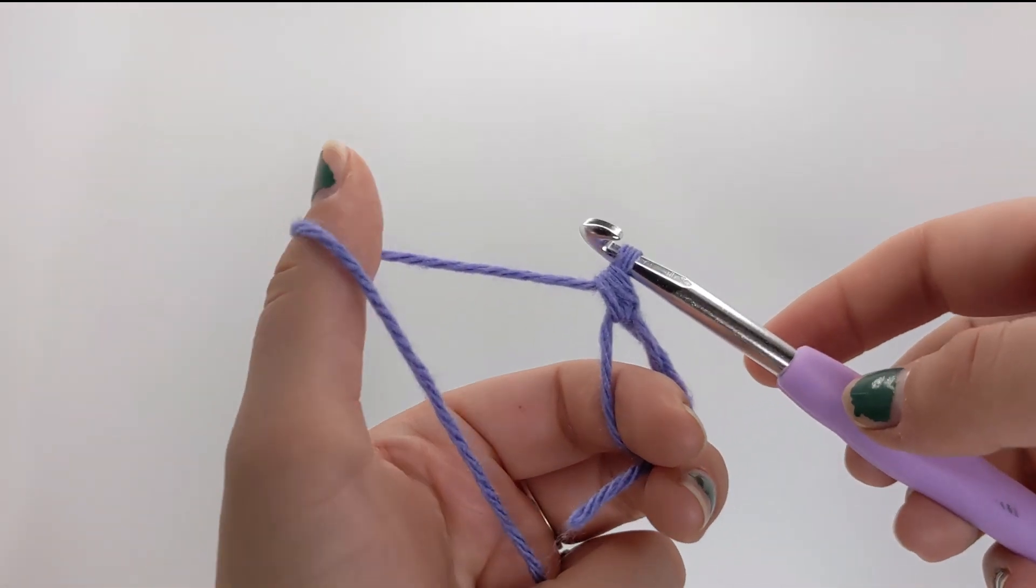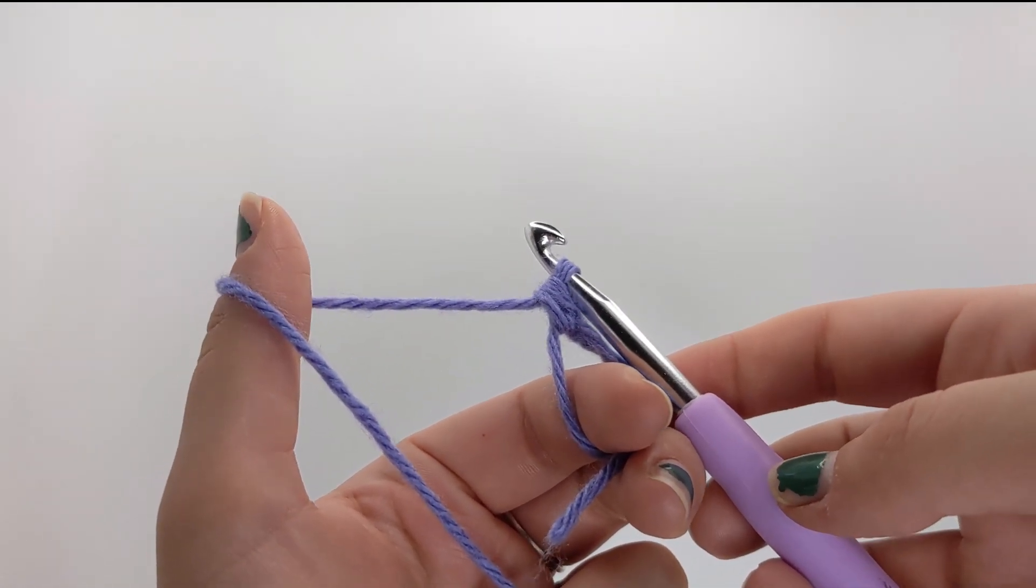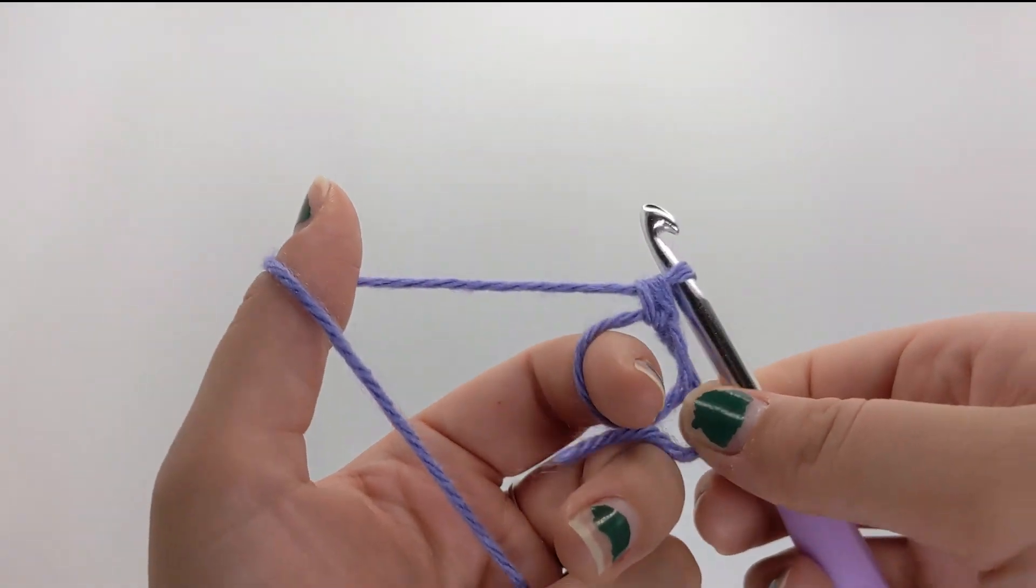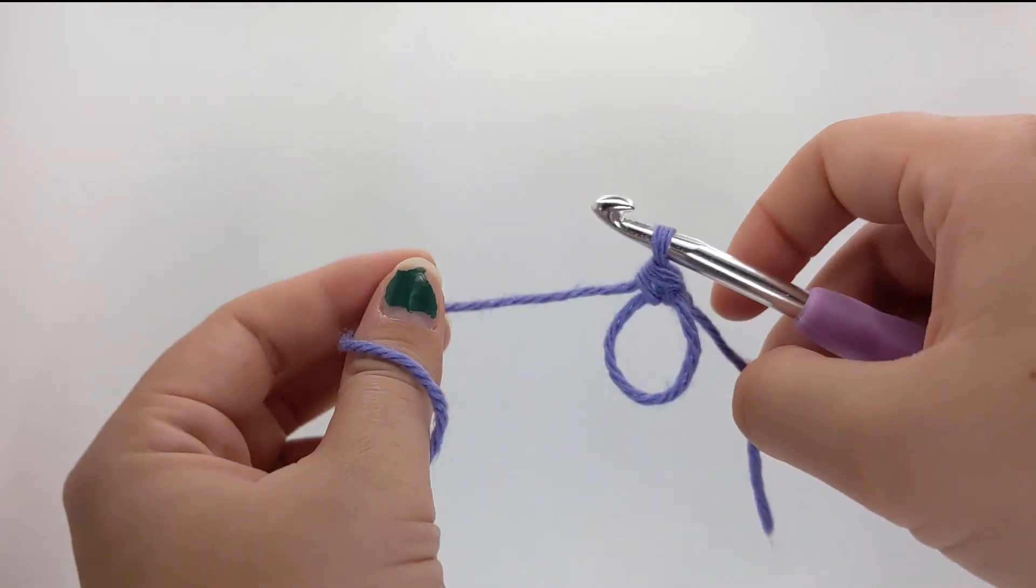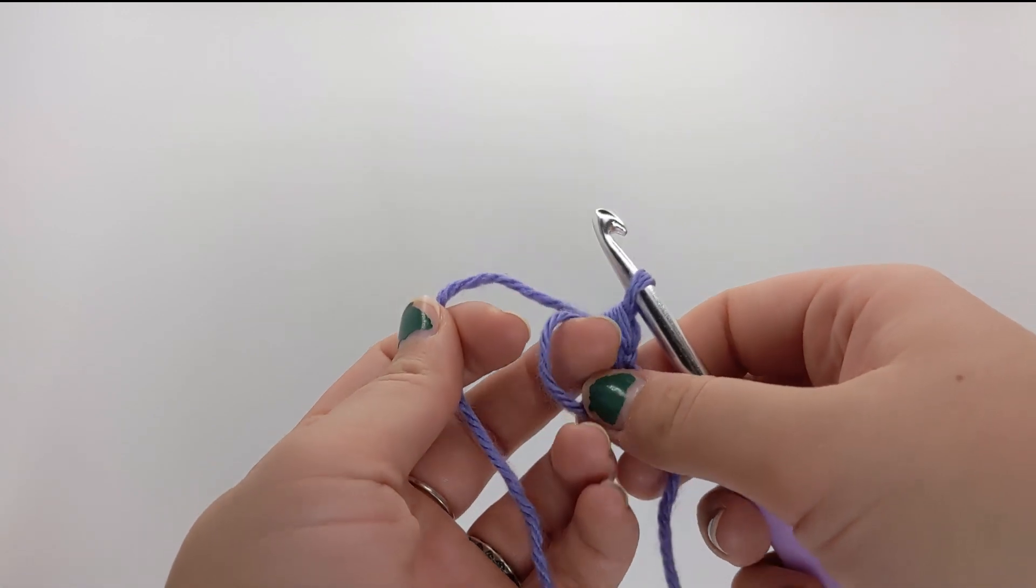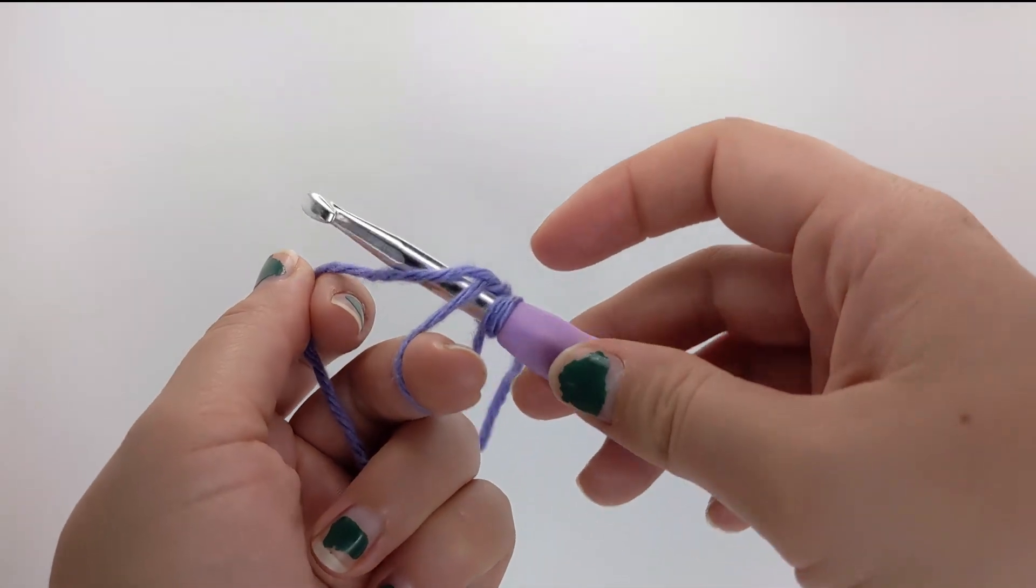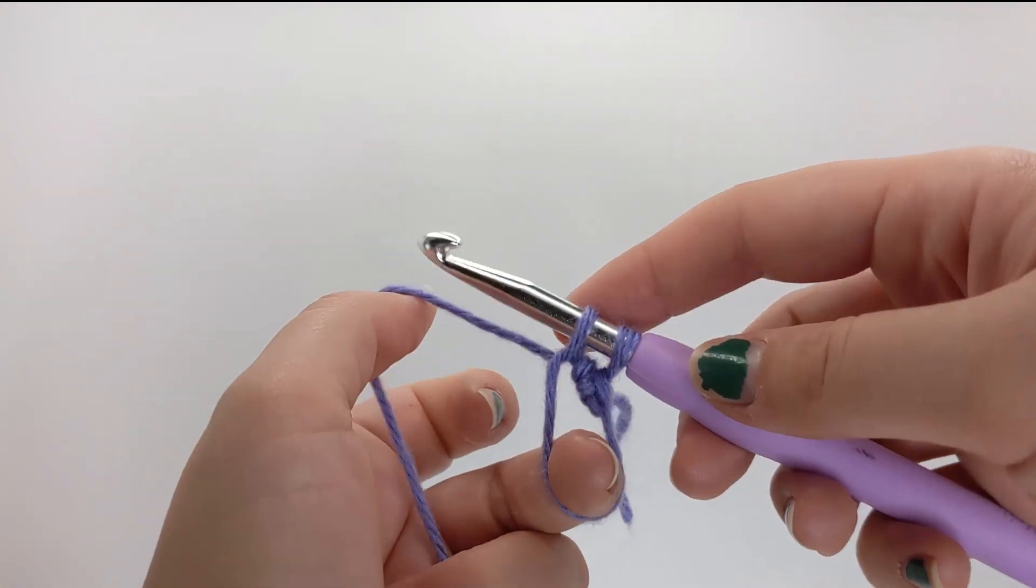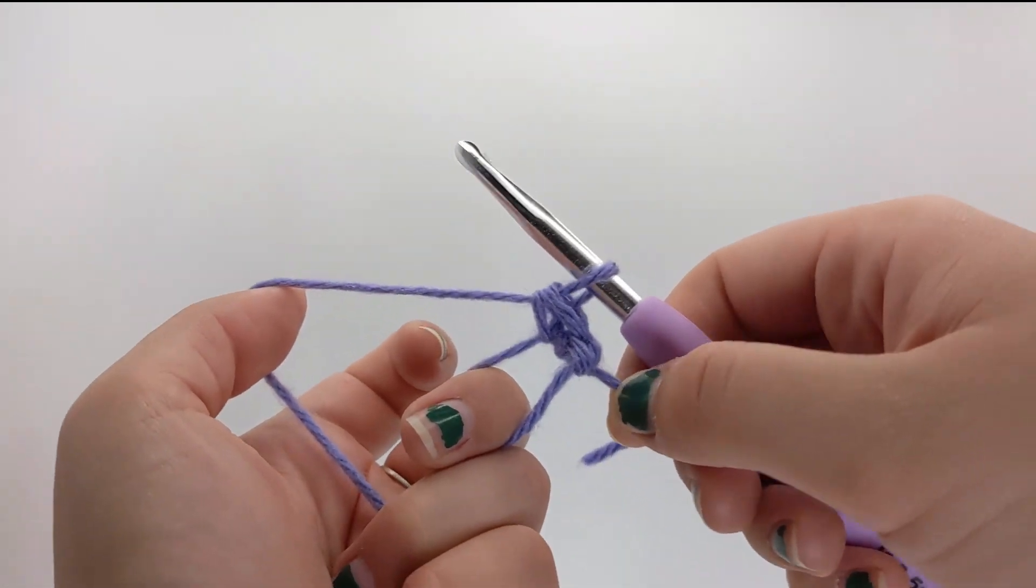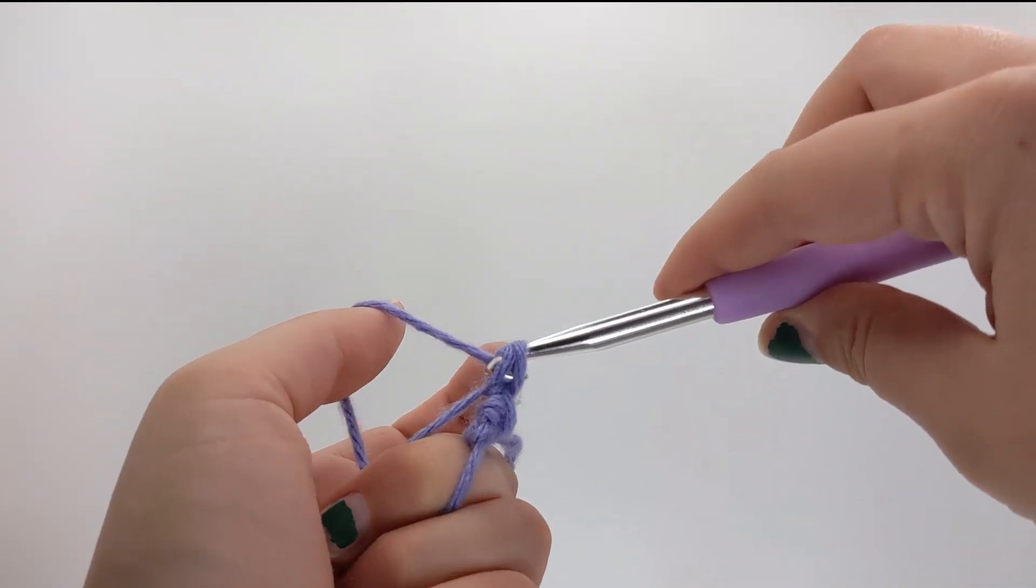Whenever you see magic rings written into patterns, it'll always say in numbers. So like six in magic ring, or eight in magic circle. Magic ring and magic circle are used interchangeably. And at this point, once you have a full first stitch, it's definitely a bit more stable. You can take your finger out and you're not going to lose your loop. And so however many you need to do, we're going to repeat that same way by going through our ring or our circle, pulling the leading strand through, yarn over and through both. And now we have two in our magic circle and you just keep repeating that process until you have however many your pattern calls for.